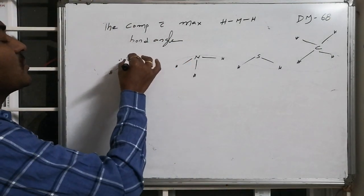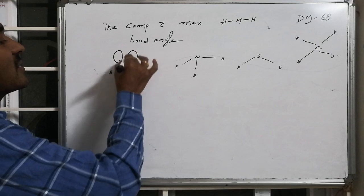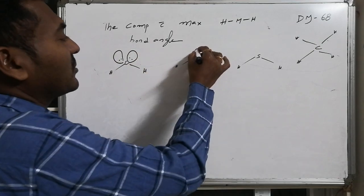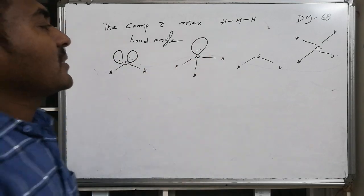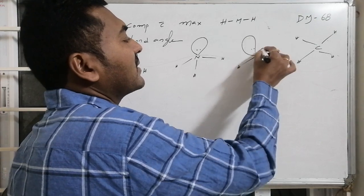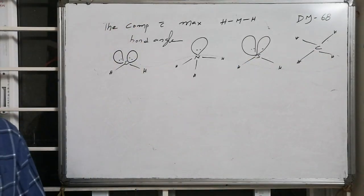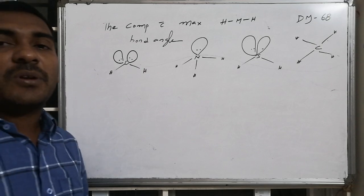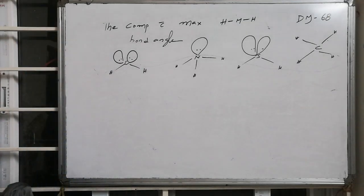In case of water there are two lone pairs. In case of ammonia there is one lone pair. In case of hydrogen sulfide there are two lone pairs. In case of carbon there is no lone pair because all four are participated in the bonding.